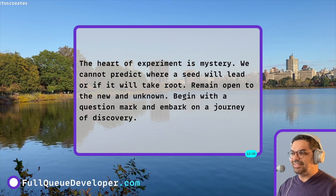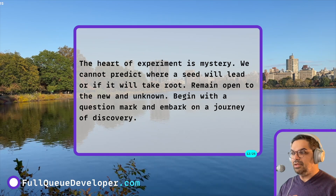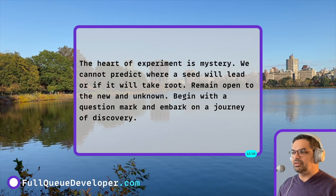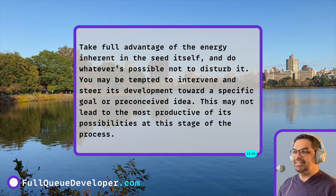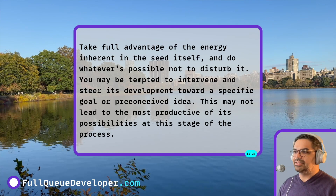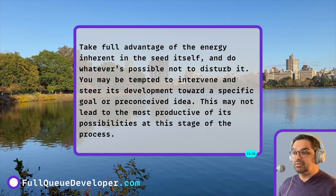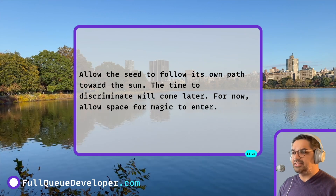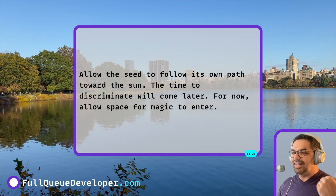The heart of the experiment is mystery. We cannot predict where a seed will lead or if it will take root. Remain open to the new and unknown. Begin with a question mark and embark on a journey of discovery. Take full advantage of the energy inherent in the seed itself and do whatever is possible not to disturb it. You may be tempted to intervene and steer its development toward a specific goal or preconceived idea. This may not lead to the most productive of its possibilities at this stage. Allow the seed to follow its own path toward the sun. The time to discriminate will come later. For now, allow space for magic to enter.